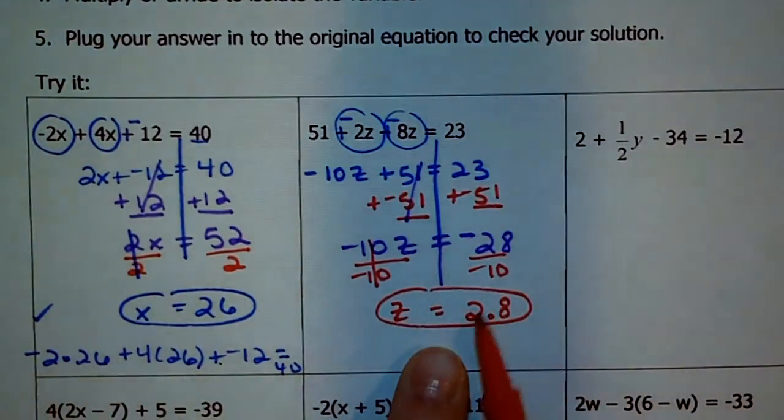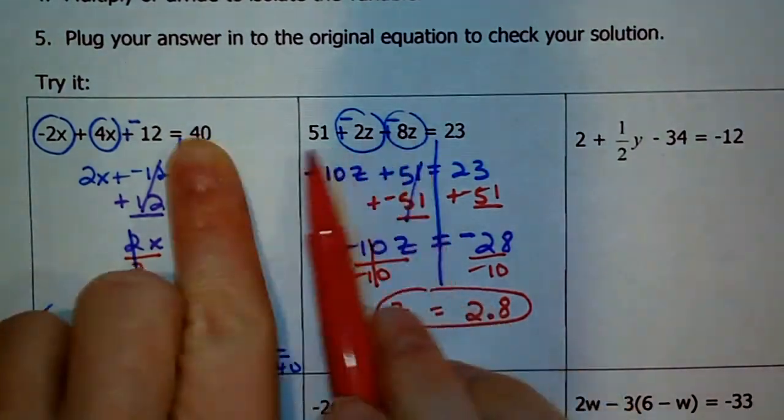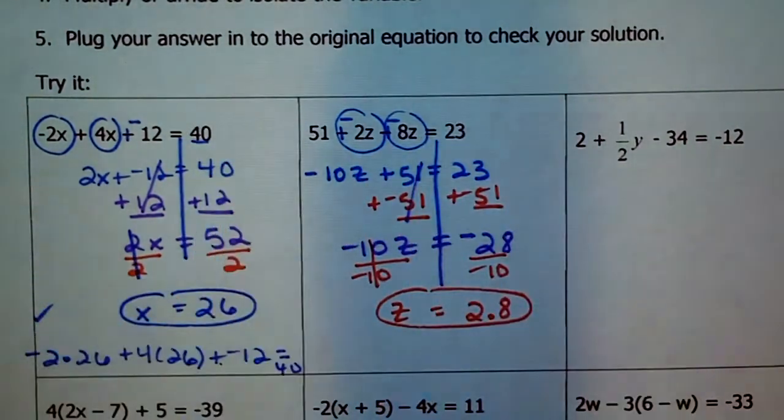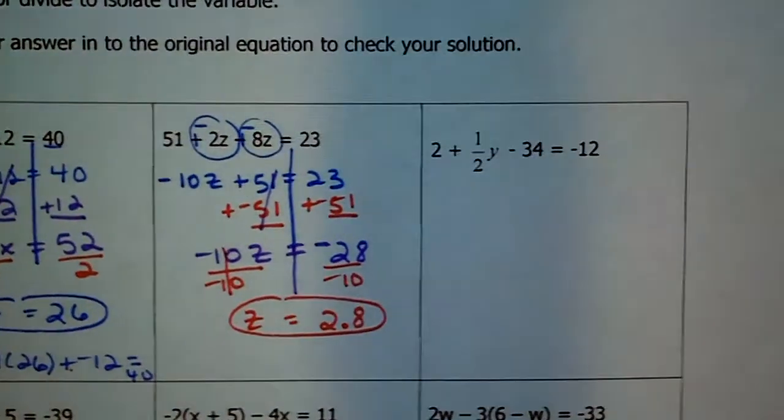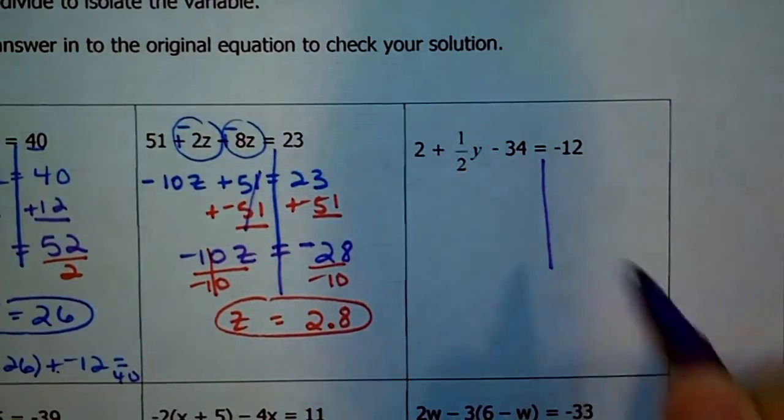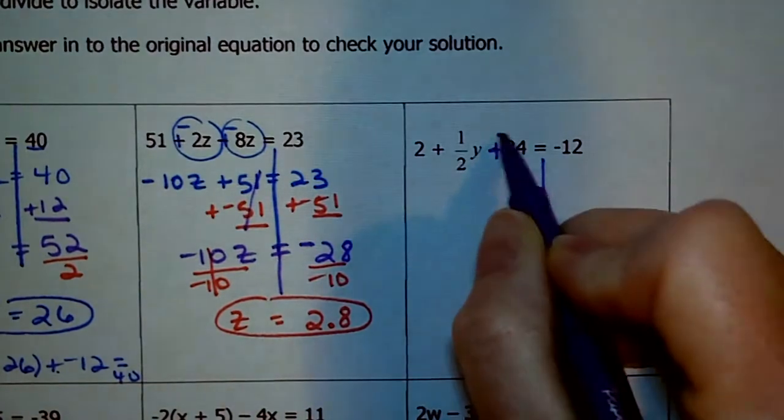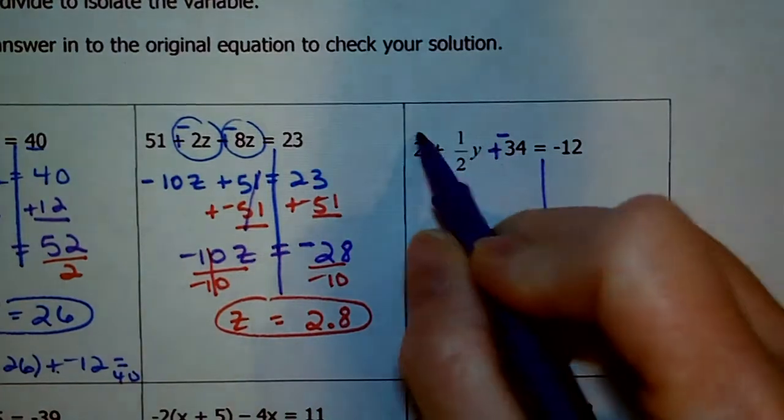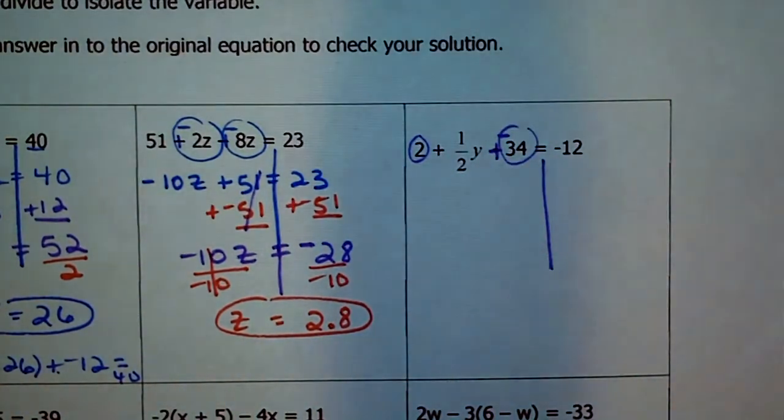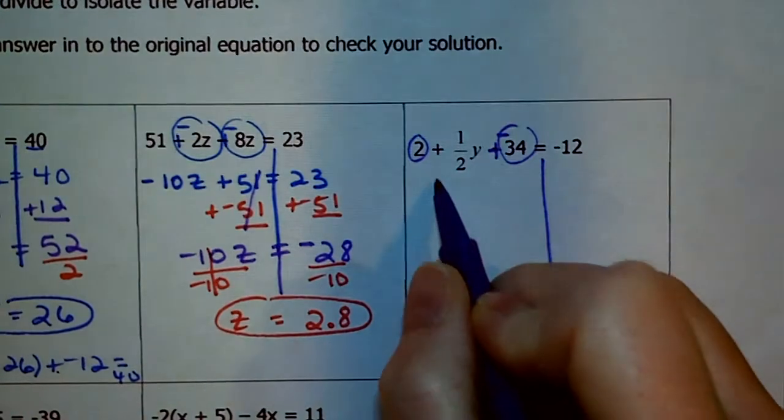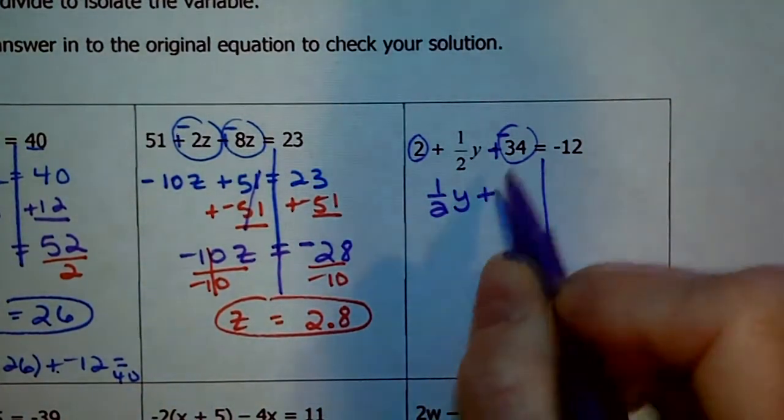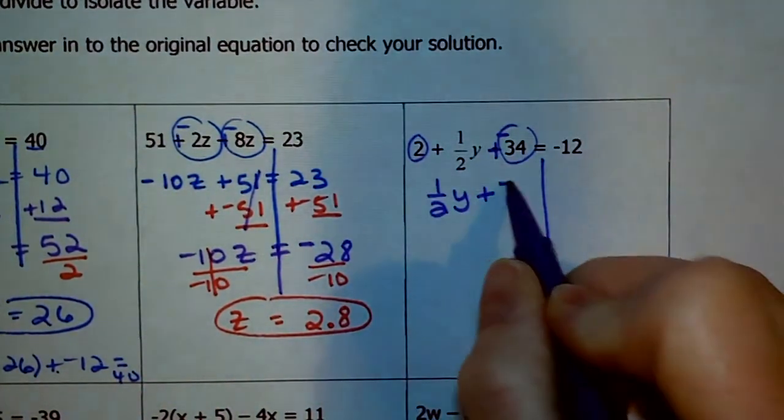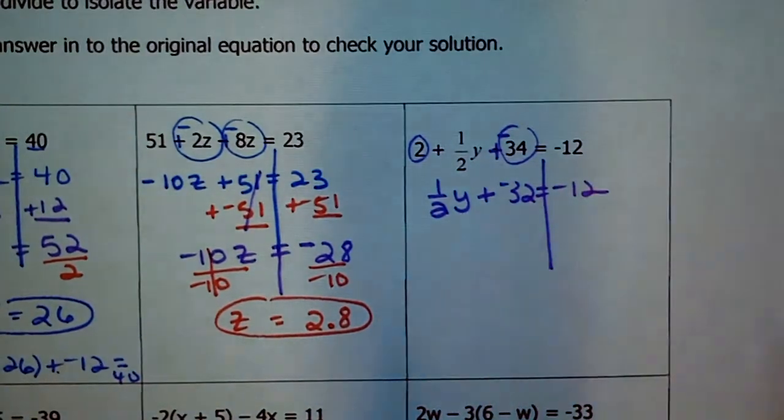Again, to check this, I would take 2.8. I would plug it in twice and just type that whole string of numbers in my calculator to make sure 23 comes out. Next, I know there's a fraction, but it's a friendly fraction. 1/2, I think, is the friendliest fraction of all. We'll draw our line, change our signs, and now like terms. This time, I only see the one y term, but I see a 2 and I see a -34. Those can definitely go together. So, I'm going to write 1/2 y and then a -34 + a positive 2 is -32, and we get -12.